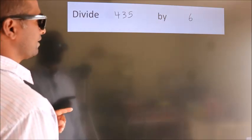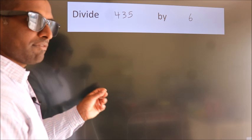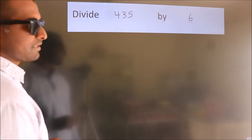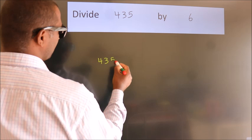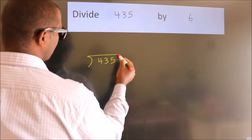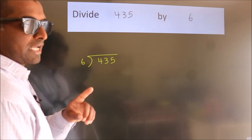Divide 435 by 6. To do this division, we should frame it in this way. 435 here, 6 here. This is your step one.